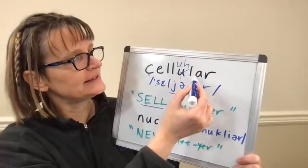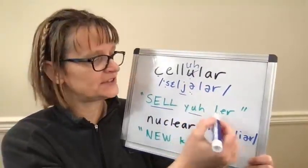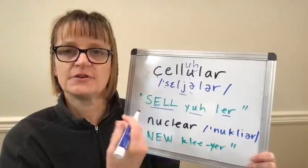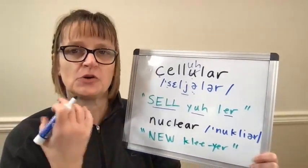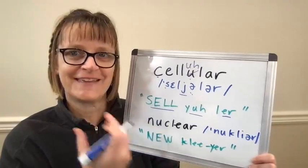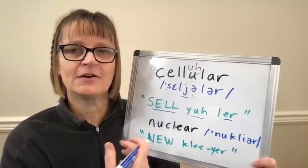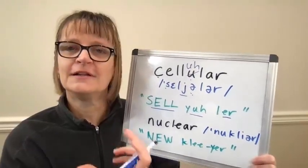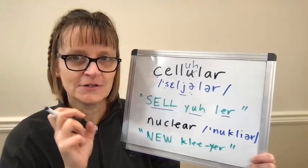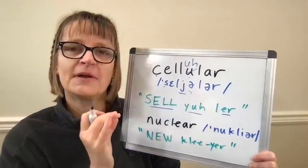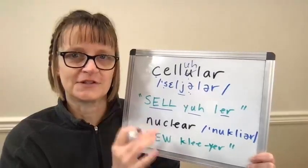Lastly, the letters A-R in 'cellular' say the E-R sound — 'er' — rather than an R sound. We spell this 'er' at the ends of words sometimes with A-R, E-R, O-R, lots of different ways. It's still that tight back American R, 'er,' but I don't have any extra vowel sound before it. It's not a diphthong.